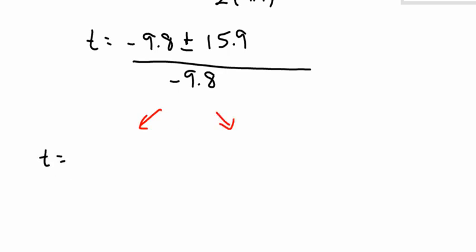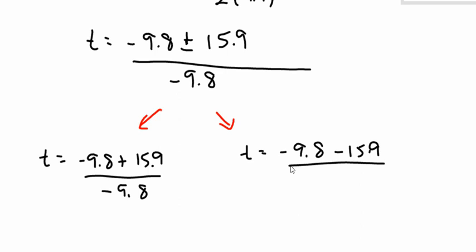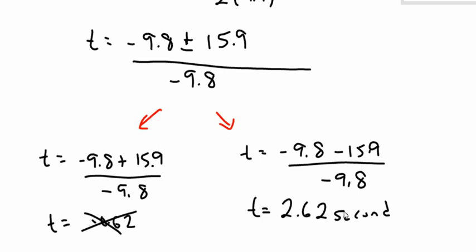t is negative 9.8 plus 15.9 divided by negative 9.8, or t is negative 9.8 minus 15.9 divided by negative 9.8. Here I get a value for t of negative 0.62. So that's on the imaginary math only part of the parabola. And over here, I get a value of 2.62. And that makes sense, because we know that the ball lands at 2.7. So at 2.62 seconds, it must have been pretty darn close to landing, like one meter off the ground. So there's my answer. 2.62 seconds.